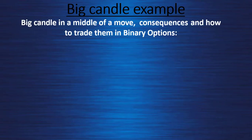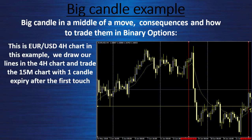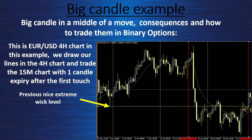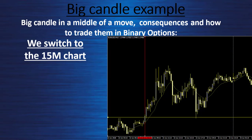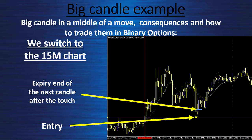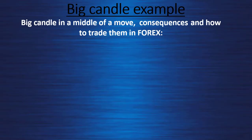Big candle in the middle of a move: consequences and how to trade them in binary option. I take the EURUSD four-hour chart, draw my line as a nice support with a nice wick, and trade it on the 15-minute chart with one candle expiry after the first touch. I have my previous nice extreme wick level and the big candle validating this support. My entry point is exactly at my level, and my expiry is the end of the next candle after the first and second touch.